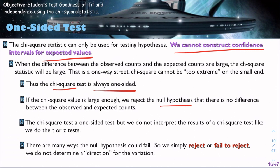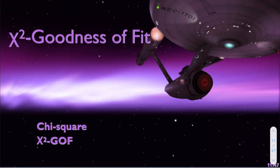The chi-squared test is a one-sided test, but we do not interpret the results of a chi-squared test like we do with a t-test or a z-test. There are many ways the null hypothesis could fail. So we simply reject or fail to reject. We do not determine a direction for the variation. These are the only two outcomes. So let's run through this test with our CEO data.